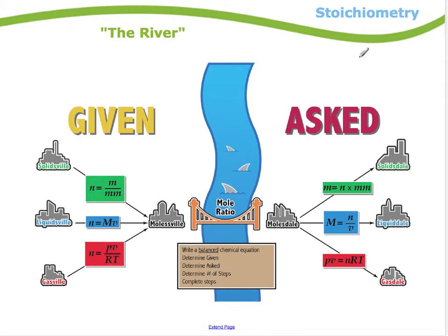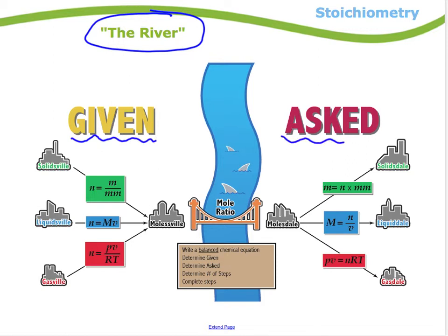An analogy I came up with about 25 years ago is something called the river. I've used this with stoichiometry and it seems to help students learn the process a little bit easier. Basically, in stoichiometry we'll be given some information and asked for other information, and there's always a step — or number of steps — you have to go through to get from the given information to the requested information.